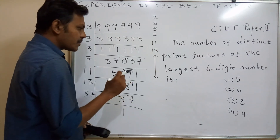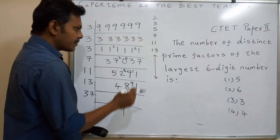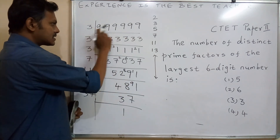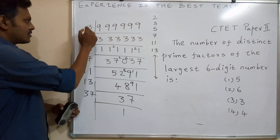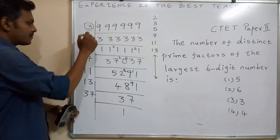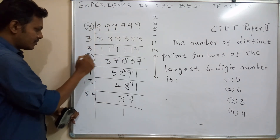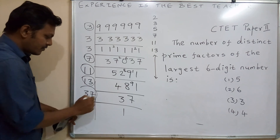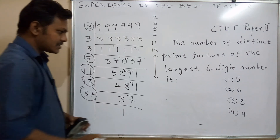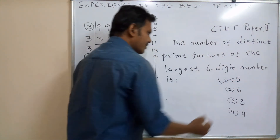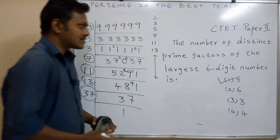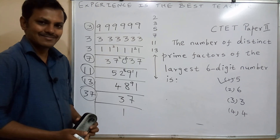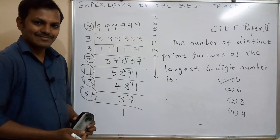The prime factorization of 9,99,999 gives five distinct prime factors: 3, 7, 11, 13, and 37. So the answer to the question — the number of distinct prime factors of the largest six-digit number — is 5. Thank you for watching this video.